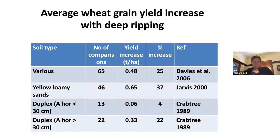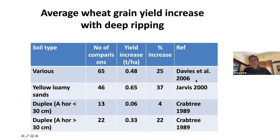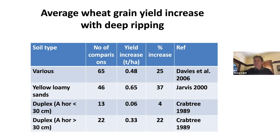Yield increases from DAFWA experiments over the years — old work by Bill Crabtree in the 1980s and more recent work from Ron Jarvis and Steve Davies — show quite impressive improvements in yield, half a tonne or more. Based on lots of comparisons, it's pretty robust data: on loamy sands and other sands, you can get quite significant boosts in yield with a deep ripping treatment on soils that have subsoil compaction.